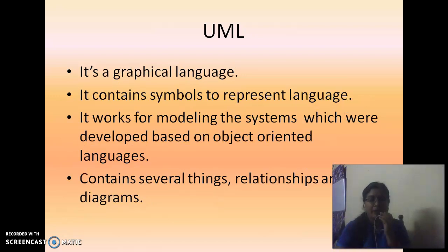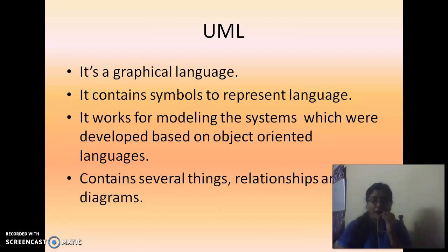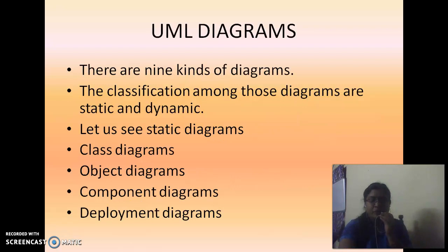What are the various contents of the Unified Modeling Language? It is a graphical language containing various graphical symbols like diagrams and arrow marks, each with its own meaning. It is used for modeling systems developed with object oriented programming languages, called object oriented systems. There are nine kinds of diagrams, classified into two categories: static and dynamic.